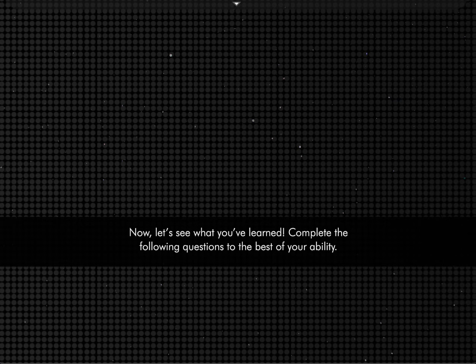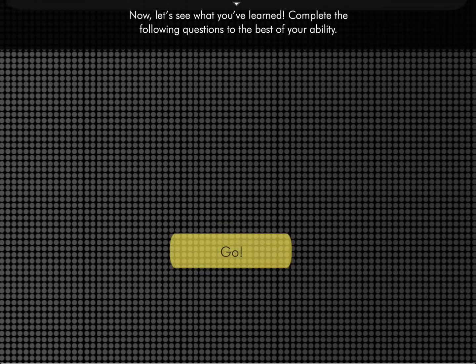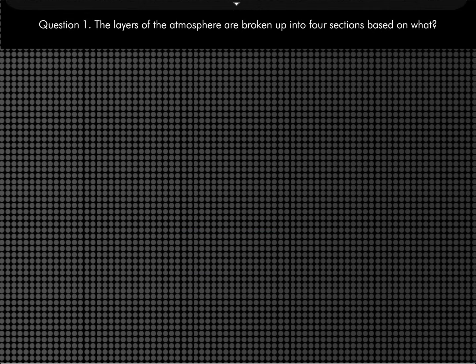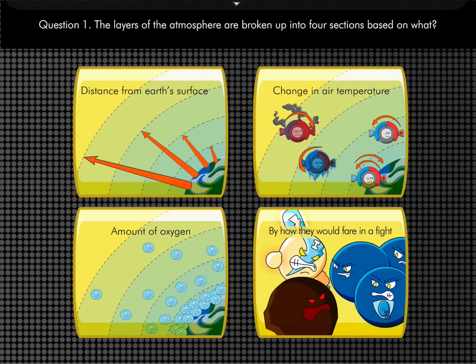Now, let's see what you've learned. Complete the following questions to the best of your ability. The layers of the atmosphere are broken up into four sections. Based on what?